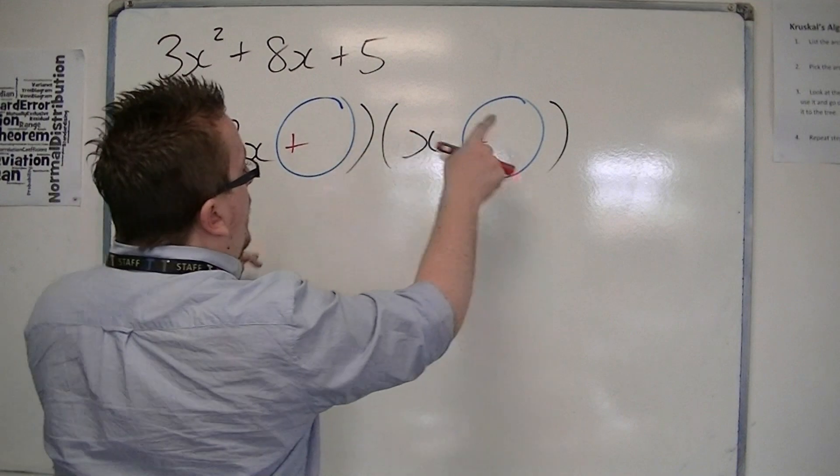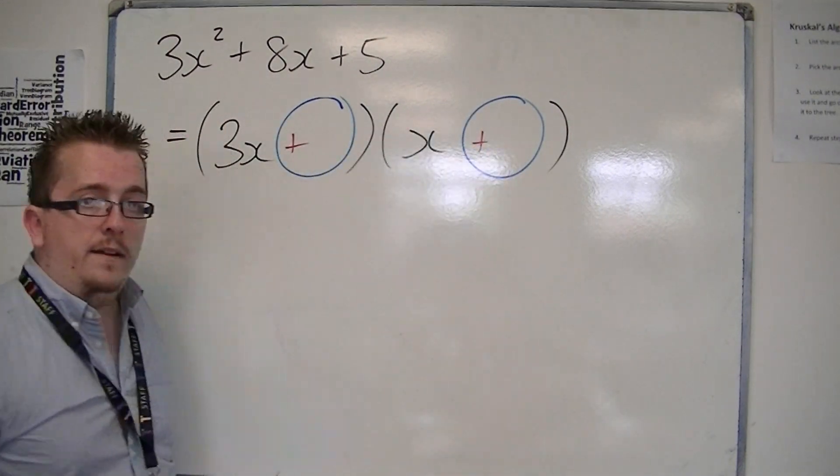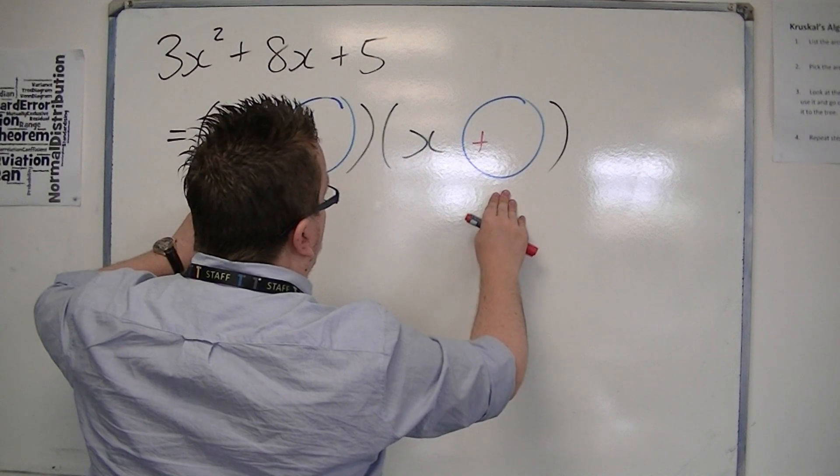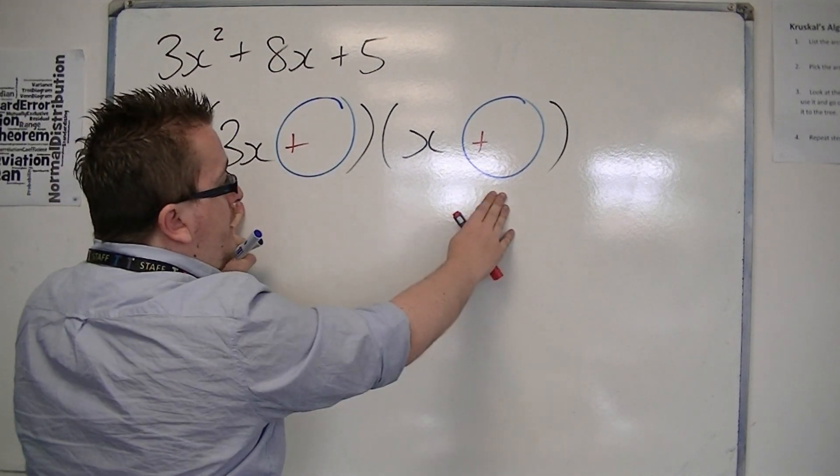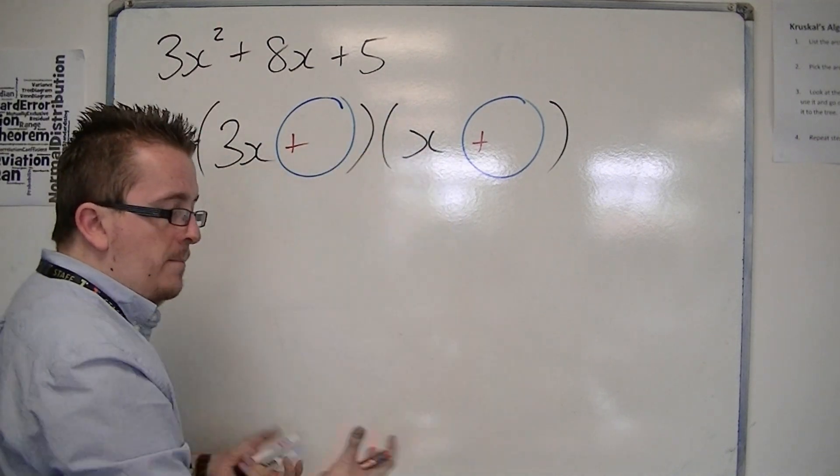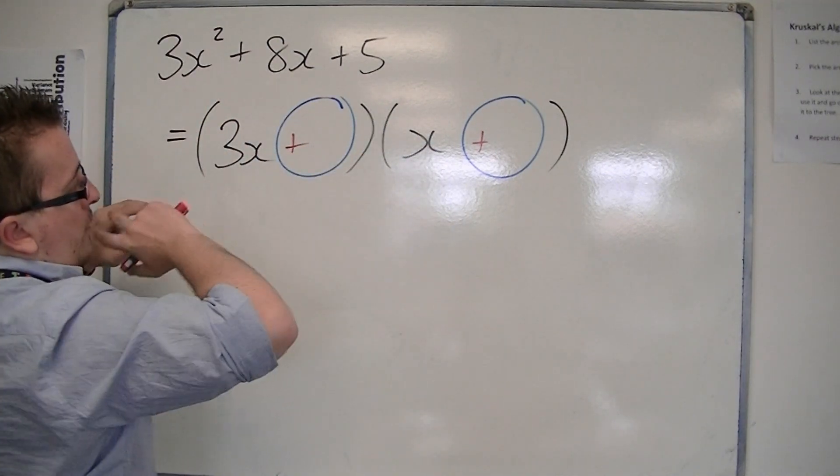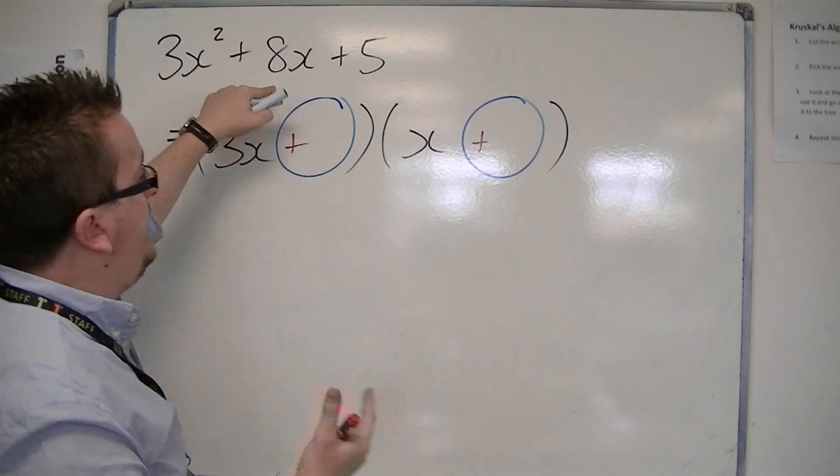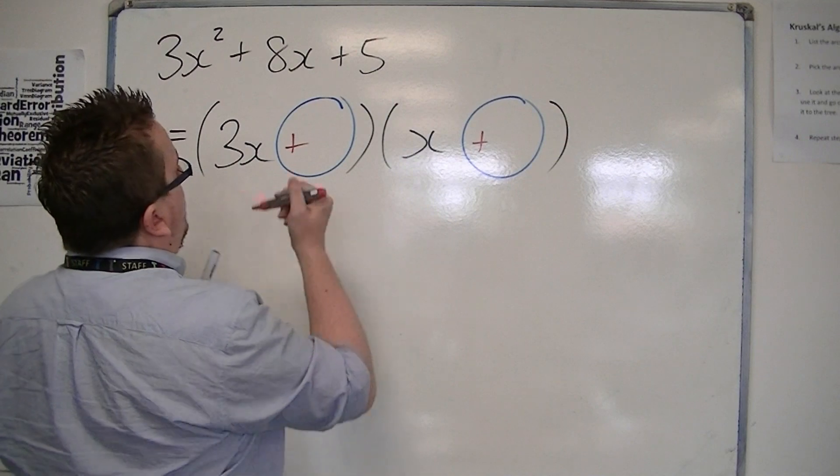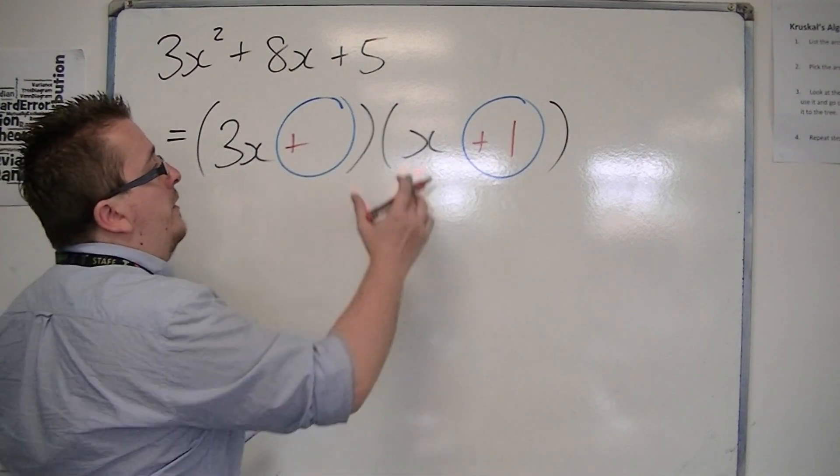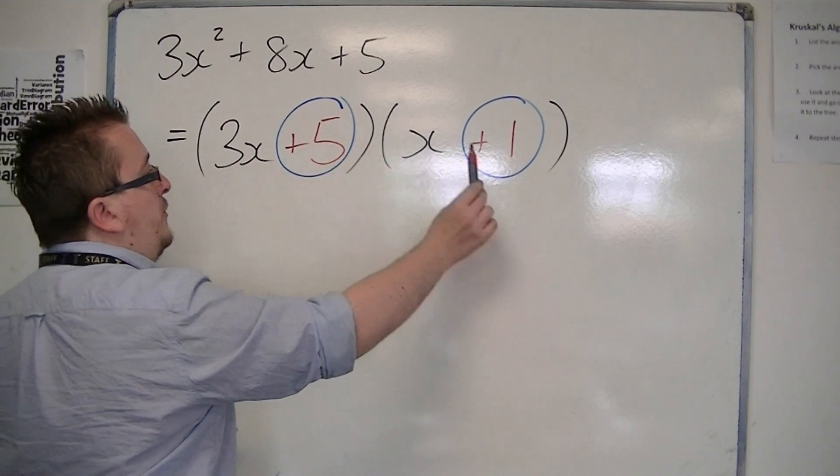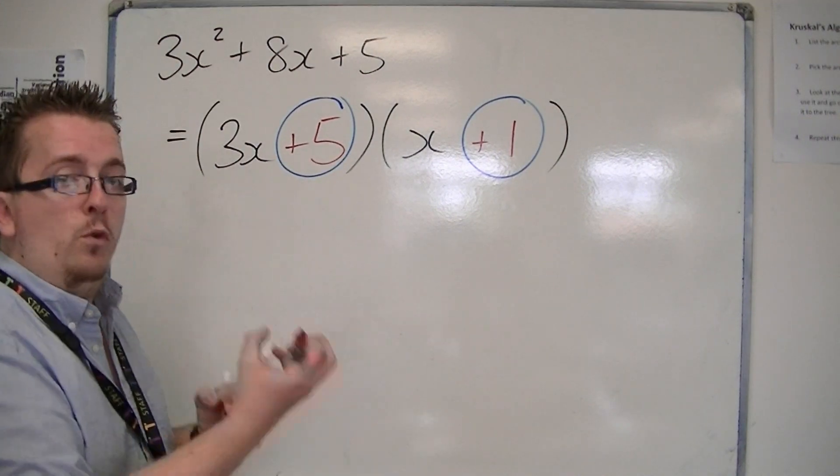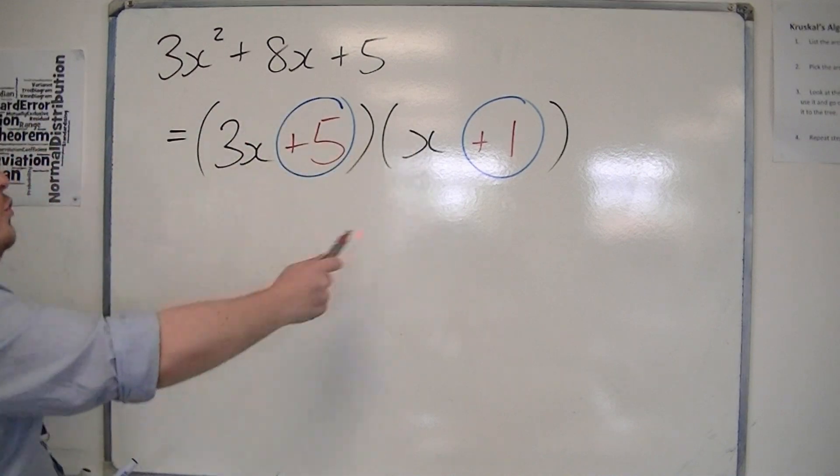So in which one should the 5 and the 1 go? Should it be 5 here and 1 there, or 1 there and then 5 there? Now, the way you do that is you think, well, 3x needs to multiply with something, either the 1 or the 5. And then I need the x to multiply with this one, and I need to combine them together. Now, if I multiply 3x by 5, I will get 15x, which would be way too much. I need 8x. So I need to multiply the 3x by the 1, so that the x could be multiplied by the 5. Then we have 3x times 1 is 3x, 5 times x is 5x, and 3x plus the 5x will make 8x. So this is the correct answer here.